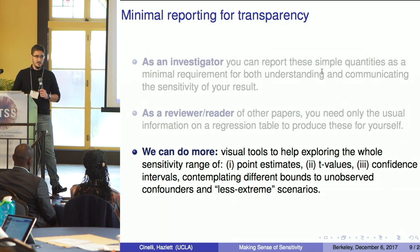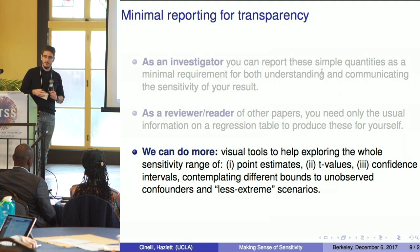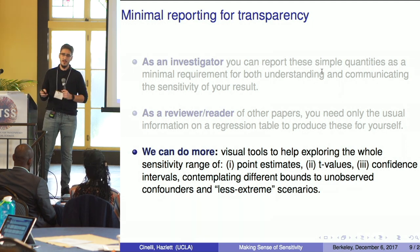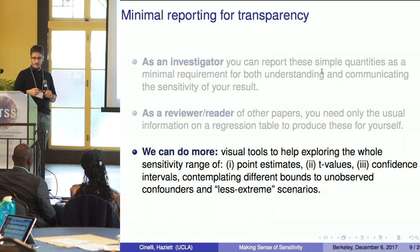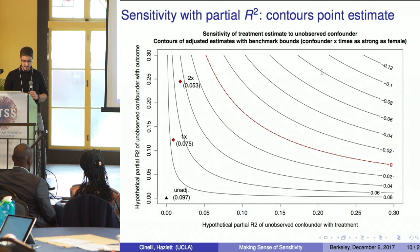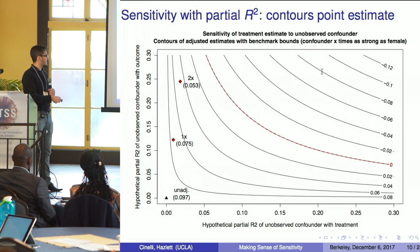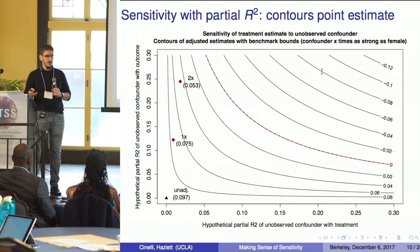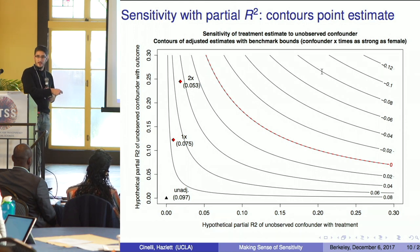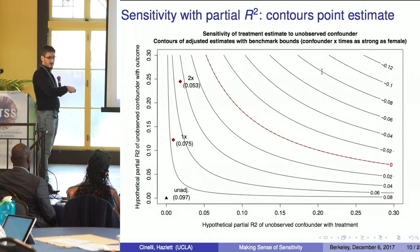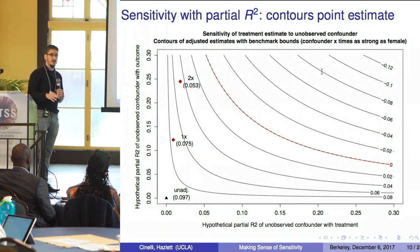We can do more. I'll show three visualizations to explore the full sensitivity range of point estimates, t-values, and confidence intervals, contemplating different bounds and less extreme scenarios. On the first sensitivity plot, the x-axis is the hypothetical partial R-squared of an unobserved confounder with the treatment, and the y-axis is the hypothetical partial R-squared with the outcome. The origin represents no confounding; moving away, the estimate goes down to zero and flips sign — showing the whole range of what a confounder could do.